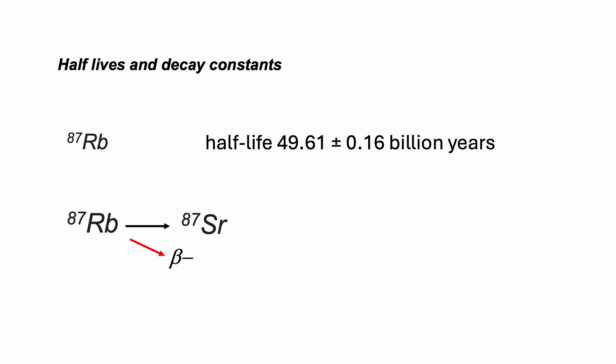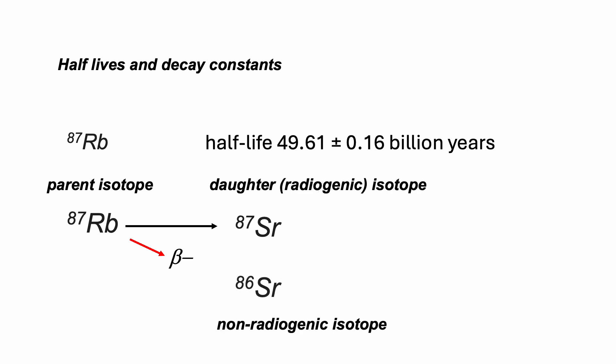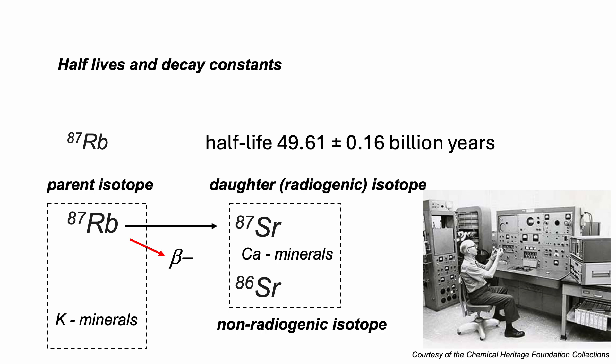So, 87 rubidium decays via the emission of a beta particle to create a daughter isotope 87 strontium. Strontium has another common isotope, 86 strontium, that's not radiogenic. This system is used because these elements, rubidium and strontium, are relatively common in a wide range of rocks and minerals, so the geochemistry can be tied to their geological formations. Rubidium substitutes for potassium, while strontium substitutes for calcium, both common elements in a range of different minerals. Their isotopes have been measured for decades on generations of mass spectrometers.